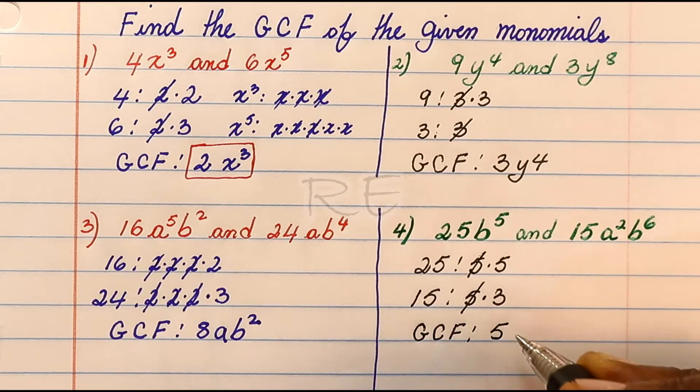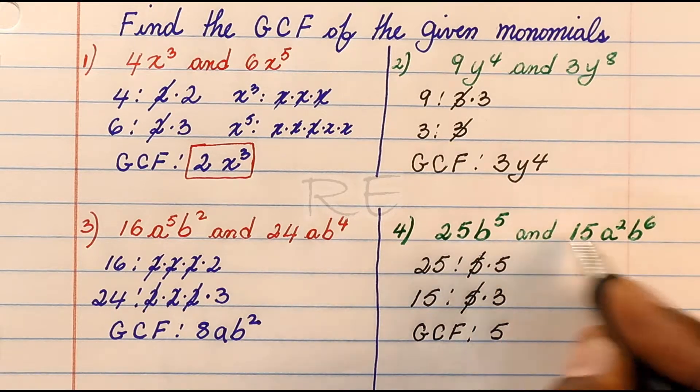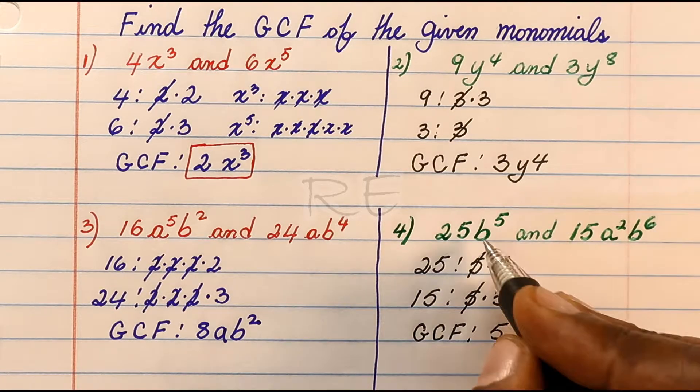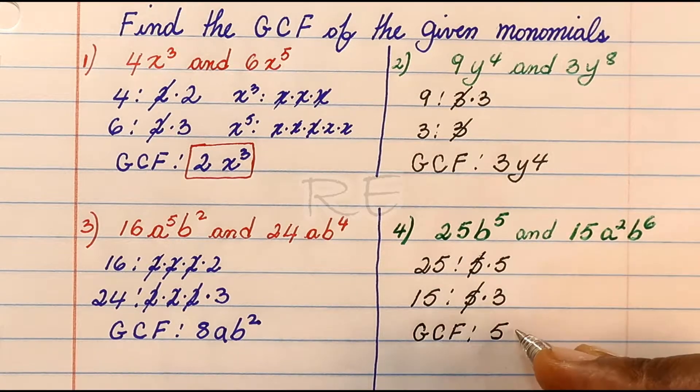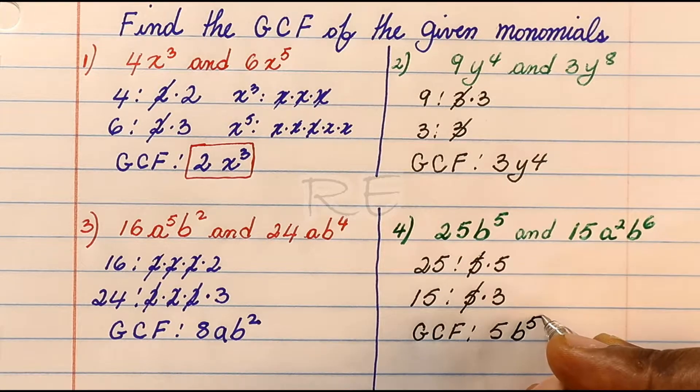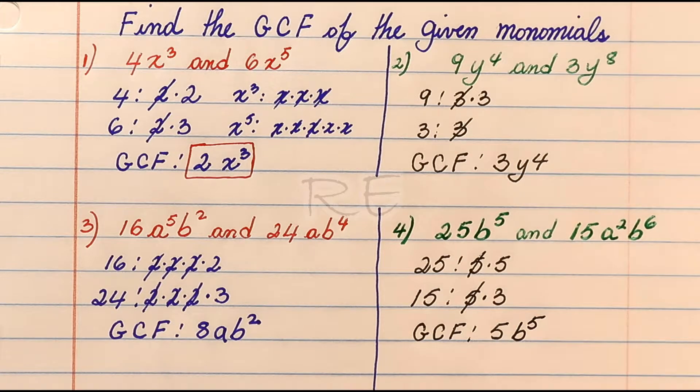A squared is by itself, so we'll skip a squared. B to the fifth and b to the sixth: b to the fifth is the common factor.